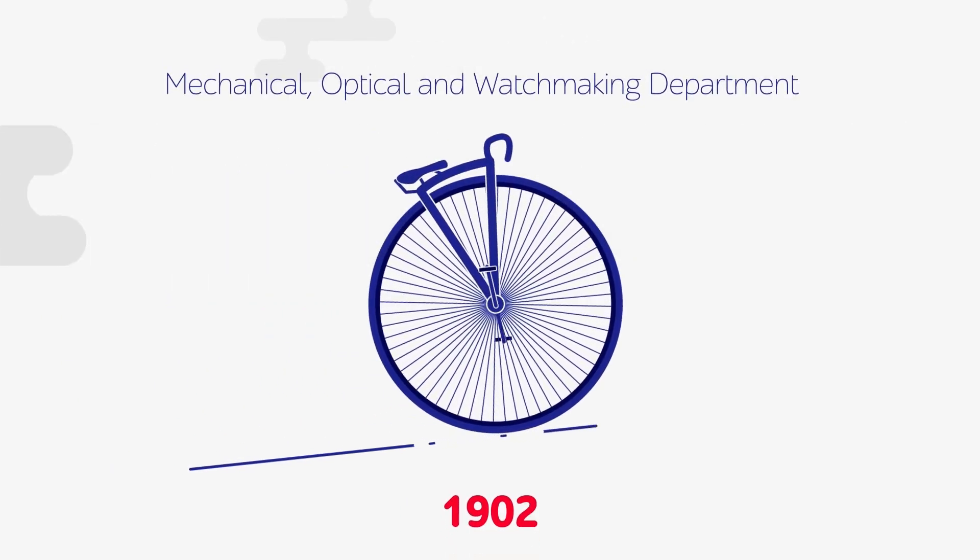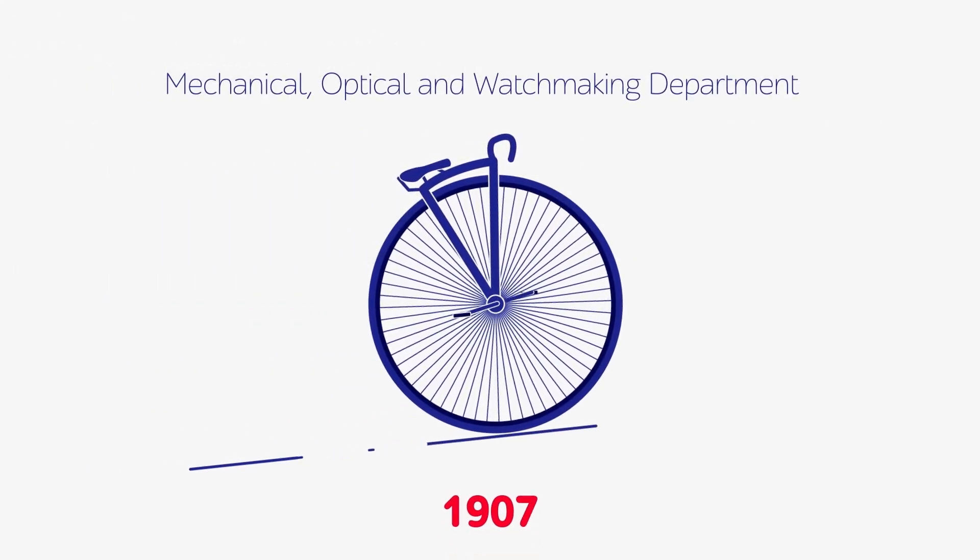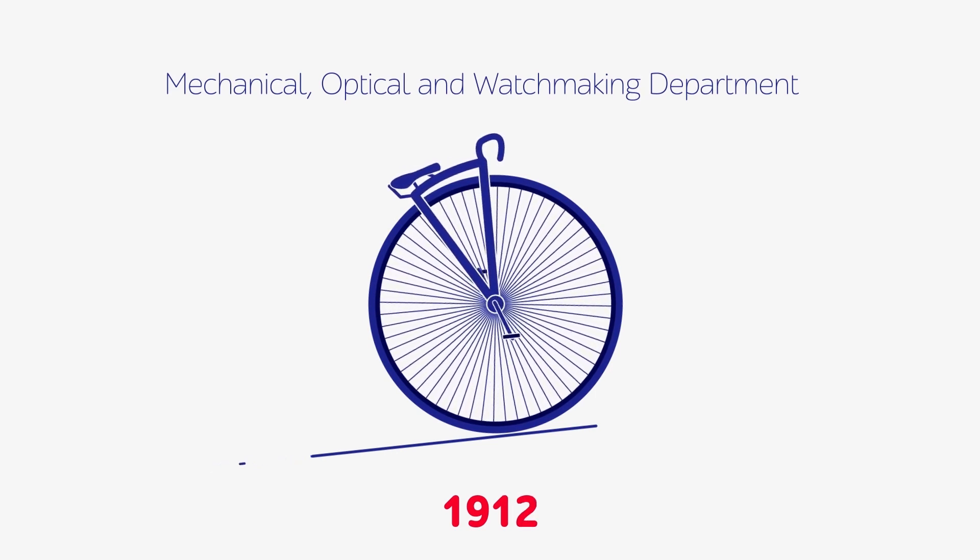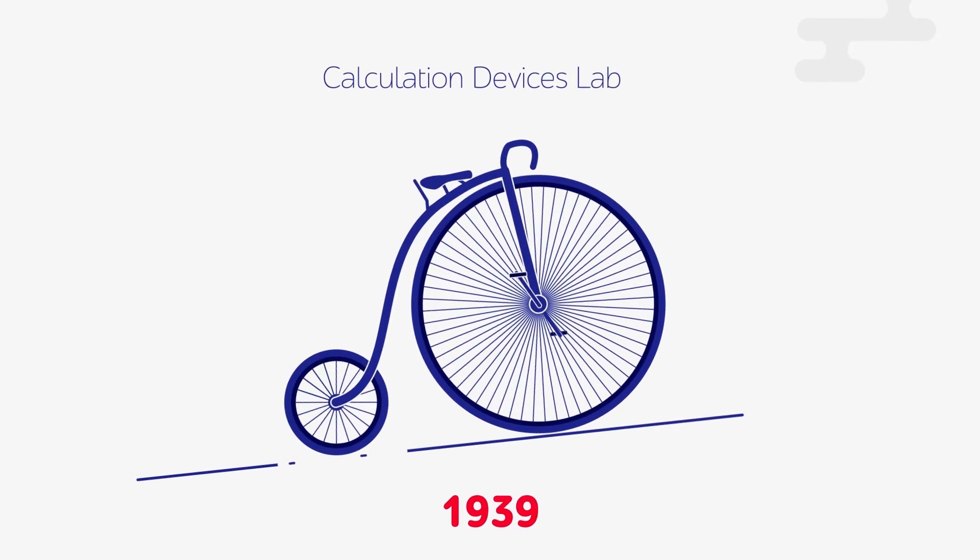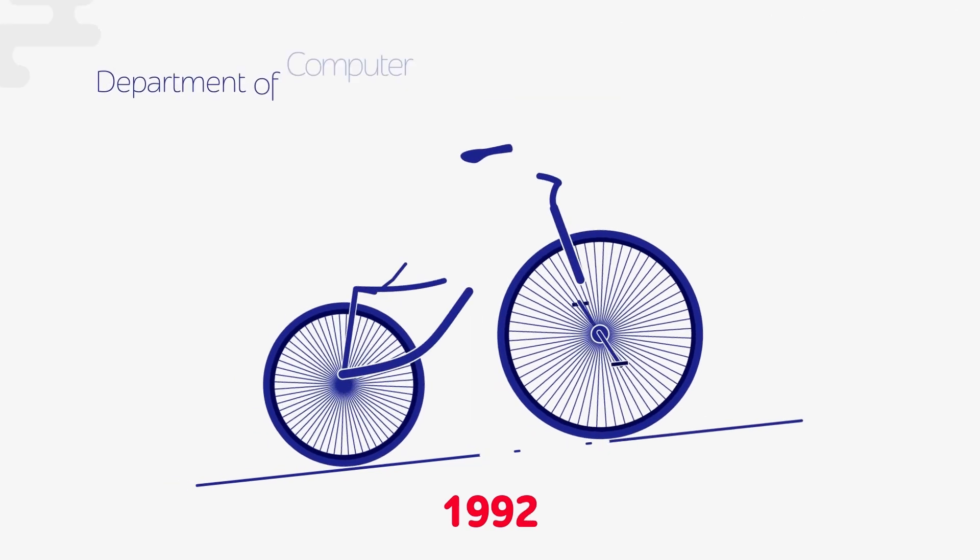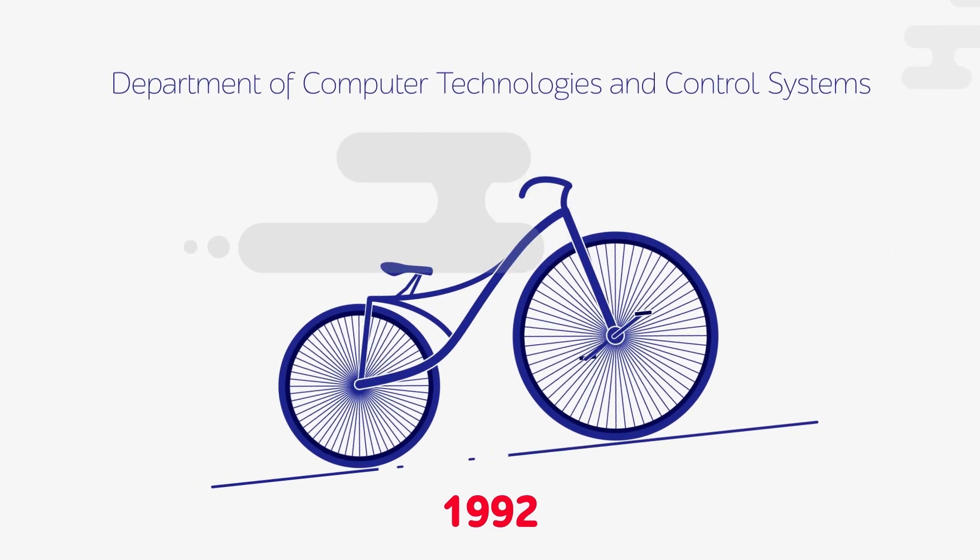It all began 115 years ago, when the first-ever mechanical and optical department was established in Imperial Russia. A new mathematics department soon followed, later to become the Department of Computer Technologies and Control Systems.